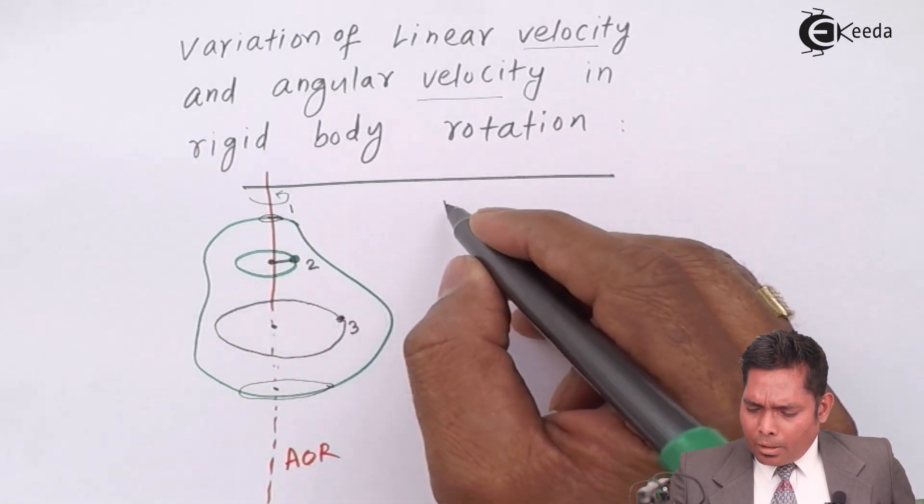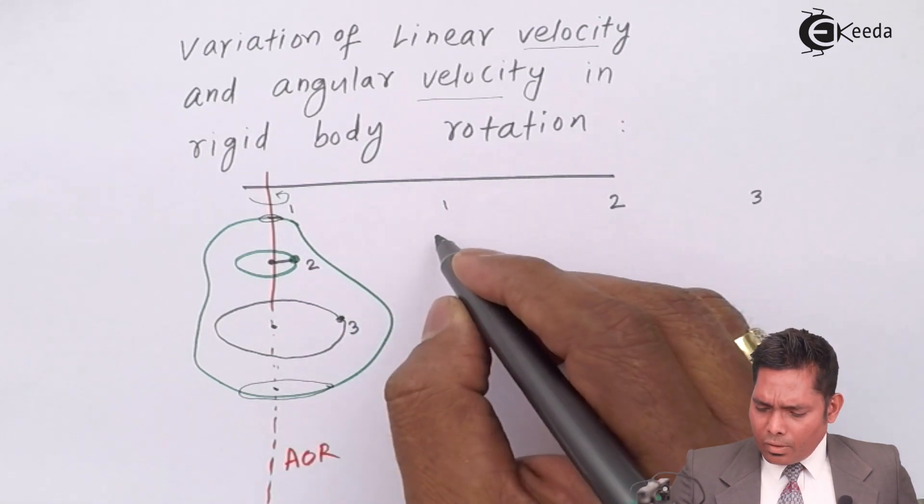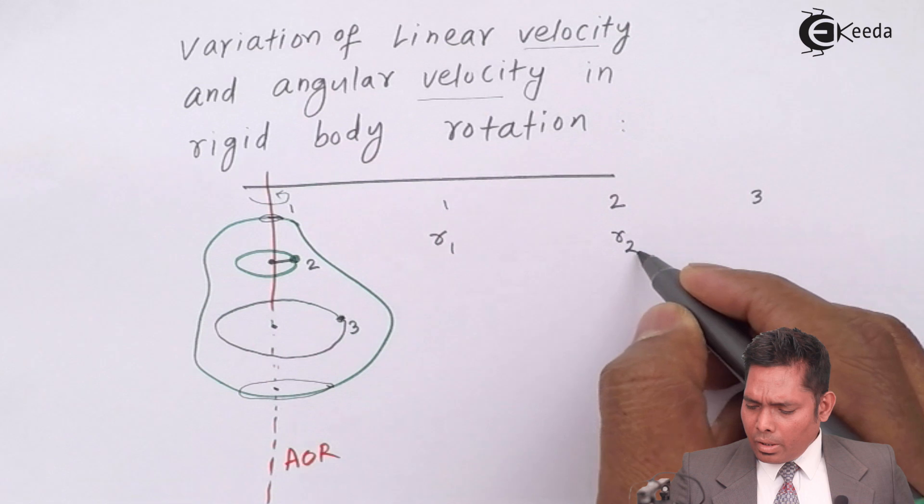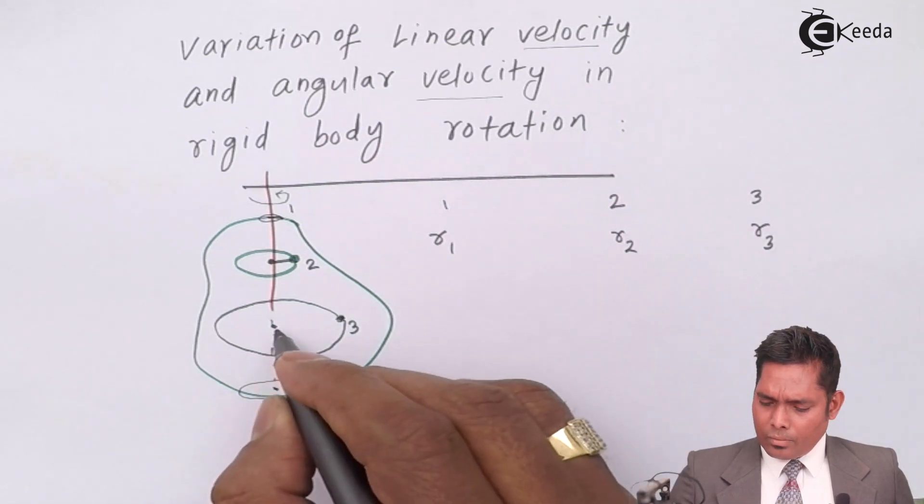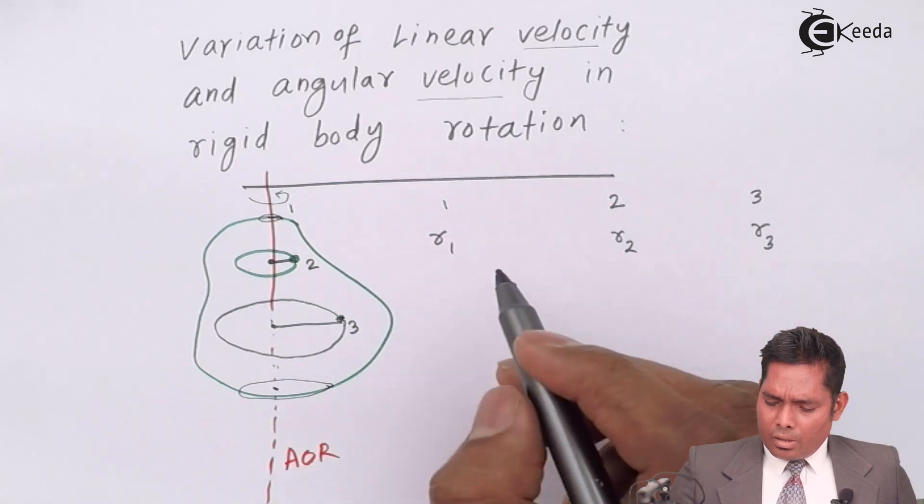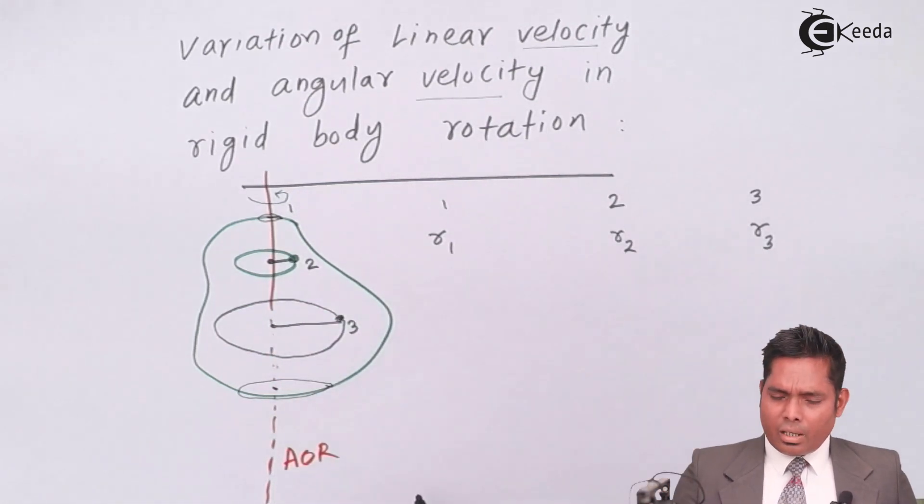You can see that the radius of first particle, second particle, and third particle. The radius of first particle is suppose r1, second particle radius is r2, and third one r3. This is the radius. Then it is obviously clear as it is seen that r3 is greater than r2 is greater than r1.